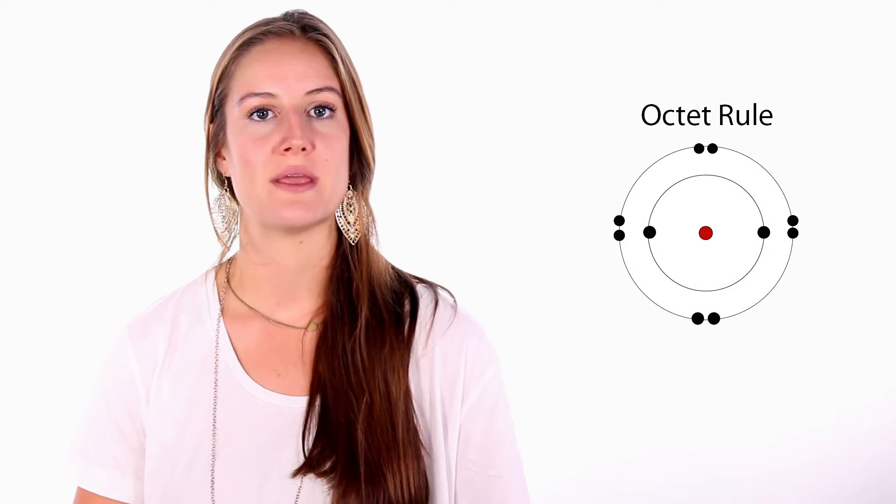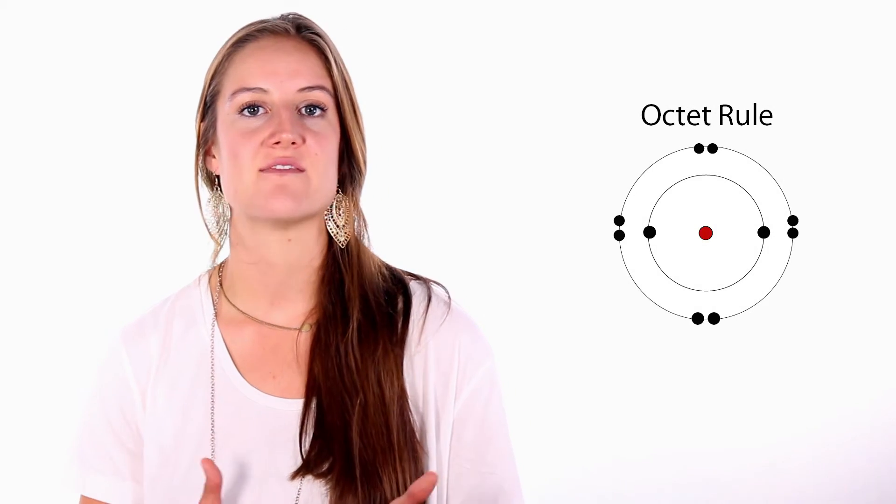Here's another way to remember it: 'co' means share, and 'valent' means valence — the sharing of valence electrons. Atoms just want to be stable like the noble gases in the world, which means they have to achieve the octet rule — meaning they need eight valence electrons in their outer shell.